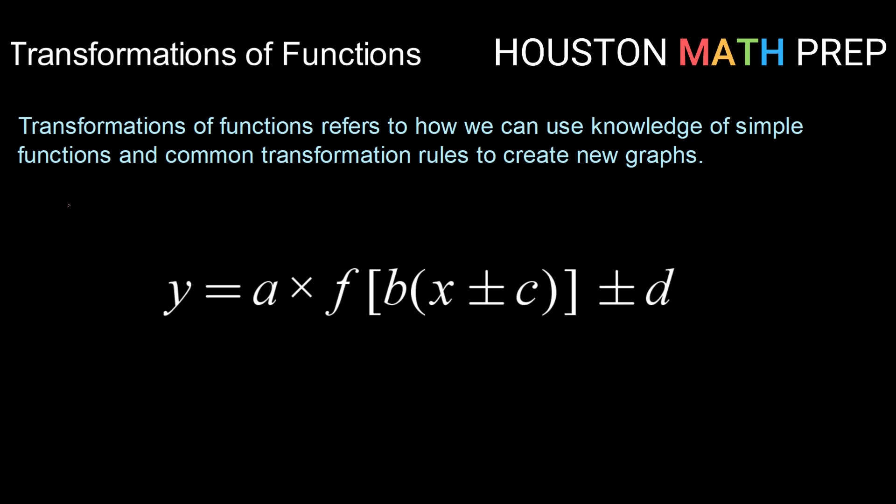We have what might look a little bit complicated here. This has all of your possible transformations wrapped into one and we're going to look at some patterns for how to know what to do with each transformation. We're going to start by labeling what each and every one of these does. So we'll just go left to right here. If we have y equals a times f of b times x plus or minus c plus or minus d.